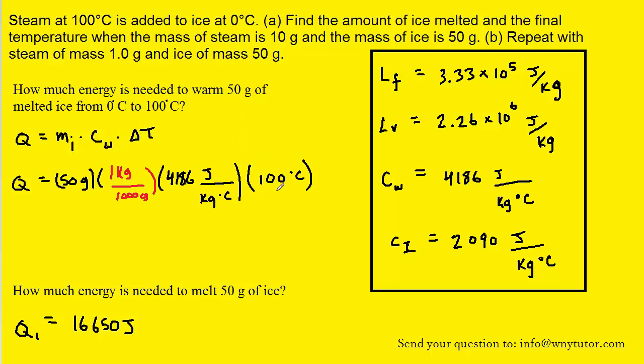Notice that the temperature change of course was 100 degrees Celsius. Again notice we had to convert the grams into kilograms of ice since the specific heat of water was given in terms of joules per kilogram degree Celsius. In terms of units, the grams will cancel, as will the kilograms, and so will the Celsius, so we'll be left with joules. So here now is the amount of energy needed to warm up 50 grams of melted ice from 0 to 100 degrees Celsius. We'll call this Q2.